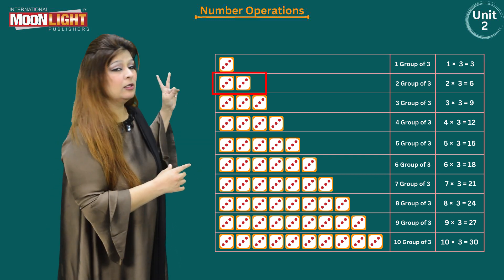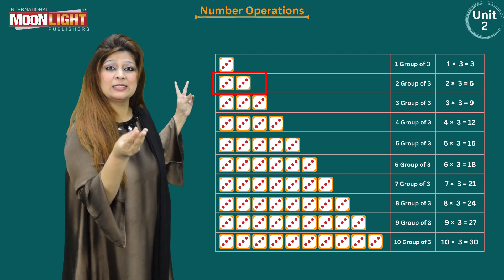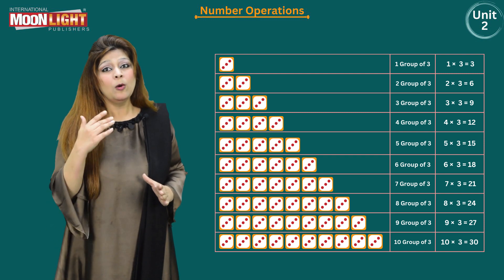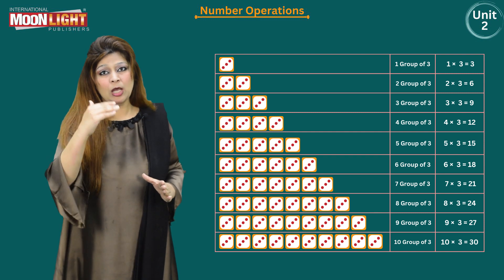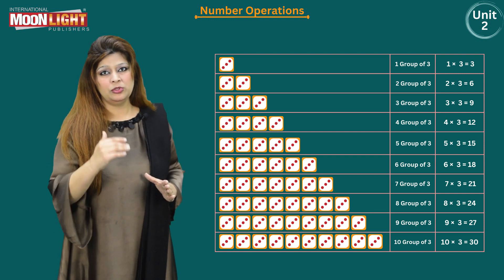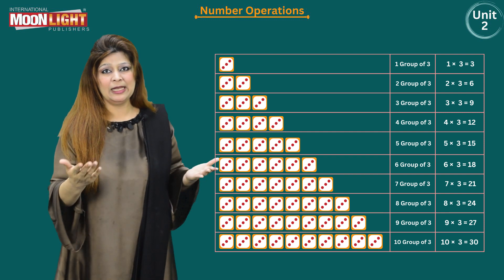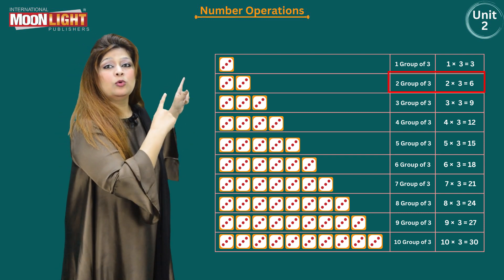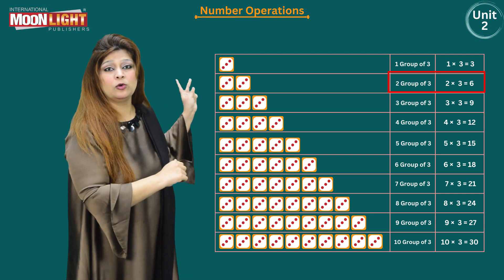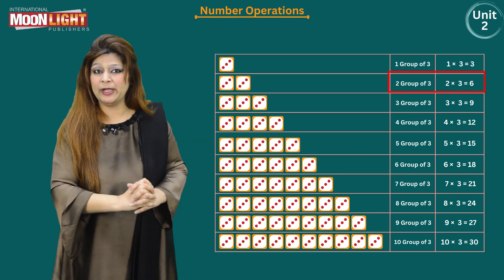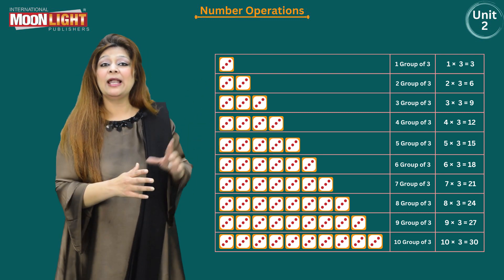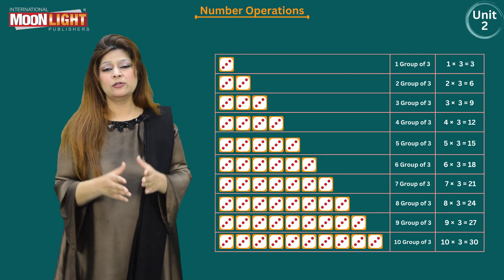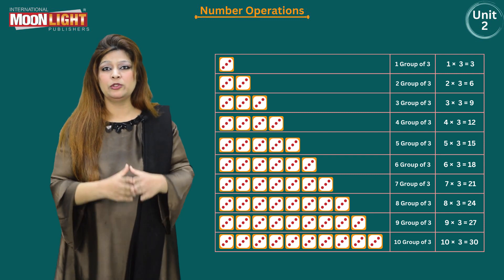Now for two groups of three — this is the three times table so we repeat three again and again. You can check on your screen: count the dots — one, two, three, four, five, six. Three plus three equals six, so two multiplied by three is equals to six, or three multiplied by two is equals to six.